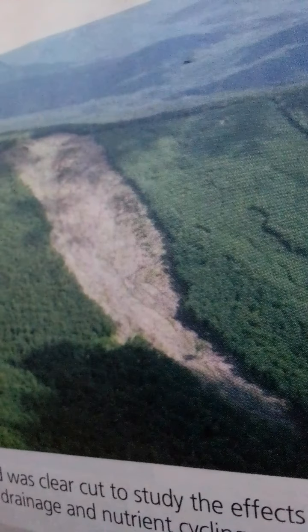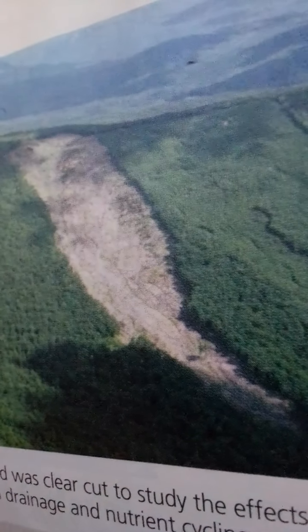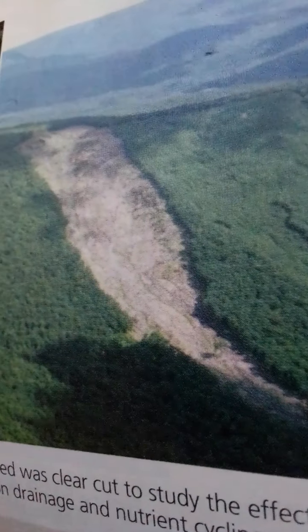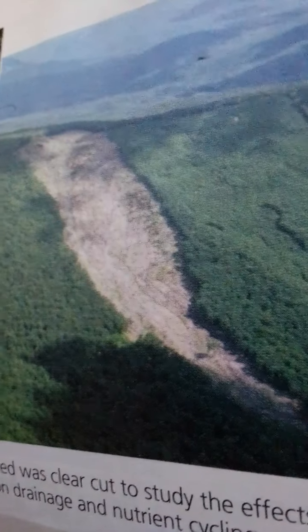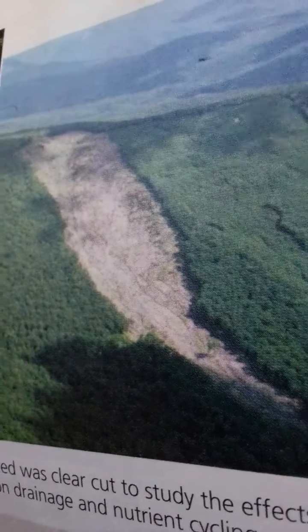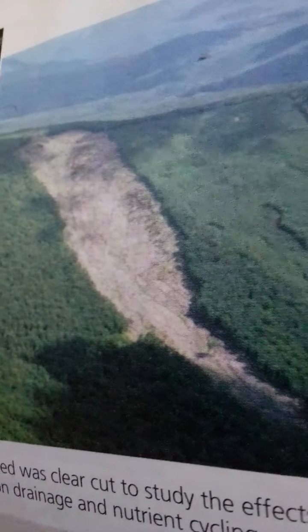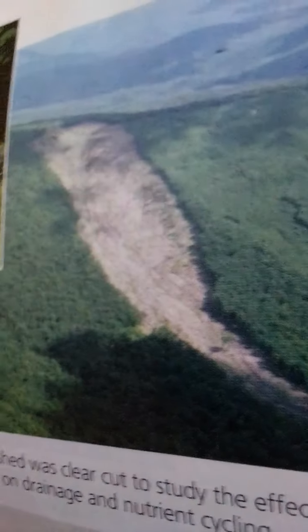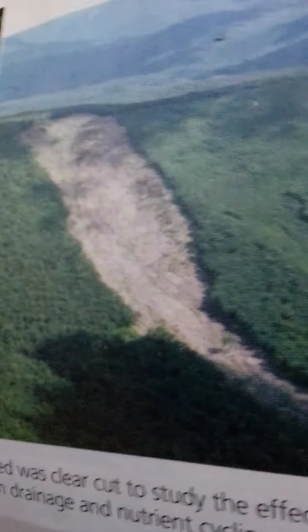The remaining 40 percent is lost by transpiration from plants and evaporation from other organisms and the soil. Preliminary studies confirmed that internal cycling within a terrestrial ecosystem conserves most of the mineral nutrients.